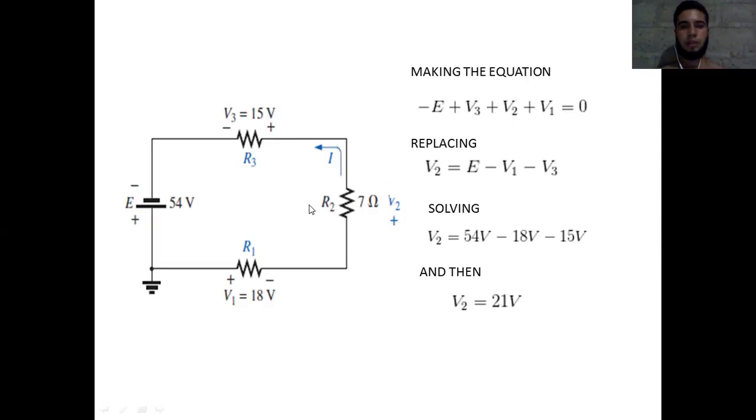So replacing in the equation, V2 equals E (that is the source voltage) minus V1 (18 volts) minus V3 (15 volts).